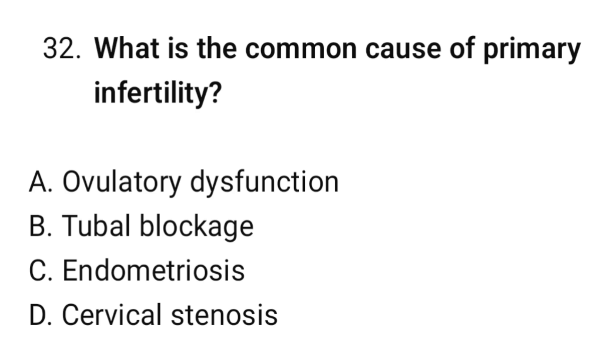Question number thirty-two: What is the common cause of primary infertility? The correct option is A. Ovulatory dysfunction.